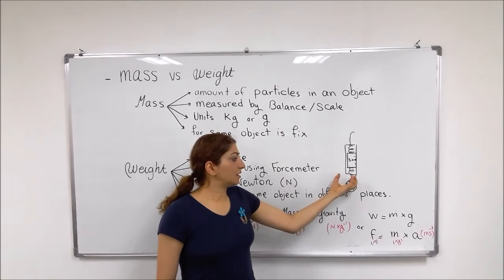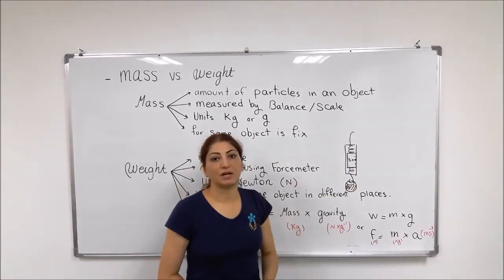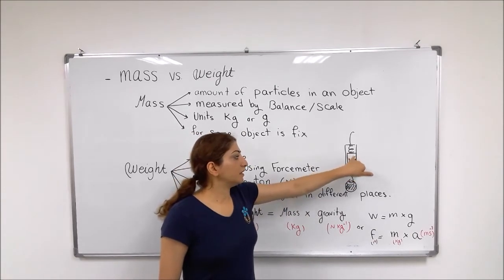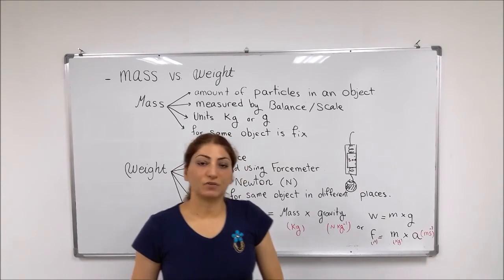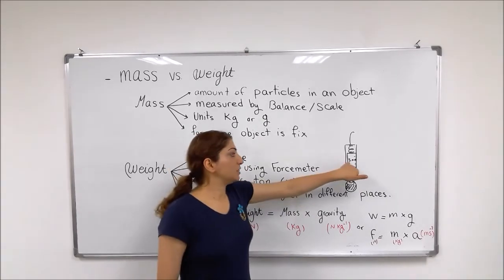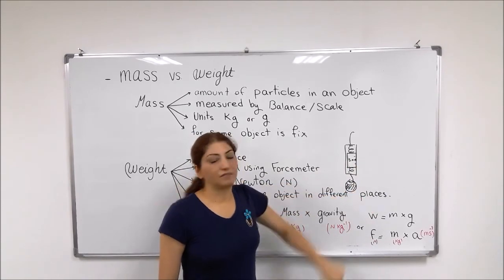And after that, depending on how much the weight is this spring will be stretched down. And there is one marker here which points to the value of the weight of that object. For example, here it is pointing onto the 5 Newton, which means that this object weighs 5 Newton.